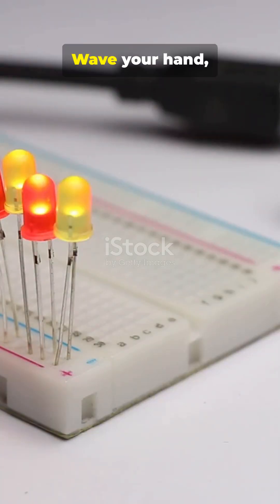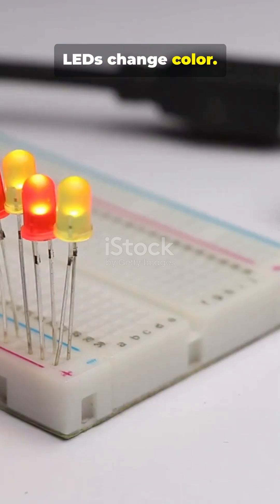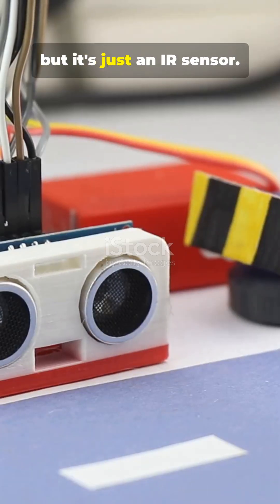Number 1. Hand gesture sensor lights. Wave your hand. LEDs change color. Looks like Vision AI, but it's just an IR sensor.